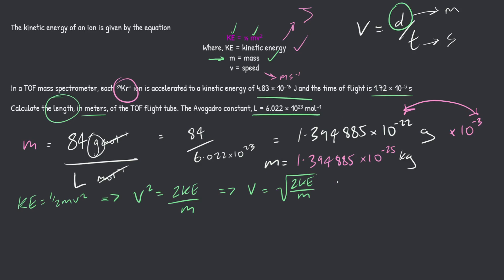So let's just plug in our variables right here. So we're going to have square root everything, what is our kinetic energy given to us in the question, 4.83 times 10 to the minus 16. Do not worry about units, just get those numbers on the page. And then our mass is going to be what we just calculated, 1.394885 times 10 to the minus 25. Now, if you put this in your calculator, you should get an answer of 83,218.39992, something around there, depending on how many decimal places you put in.